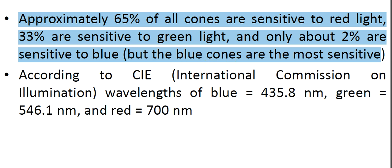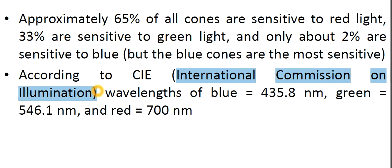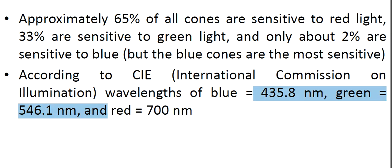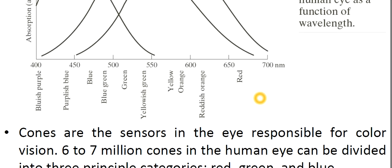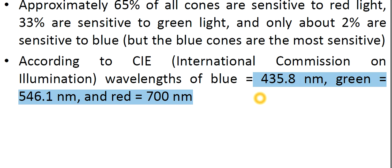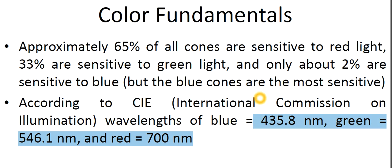As per the International Commission on Illumination, that is CIE, we have wavelength of blue as 445 nm, green as 546.1 nm, and red as 700 nm. You have seen it from the figure. So that's about the three different important cones: red, green, and blue.